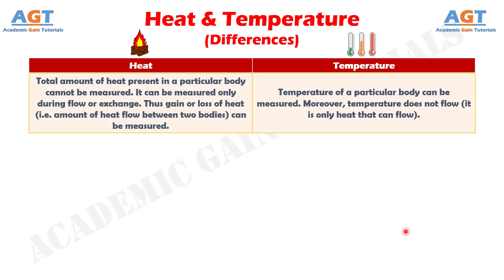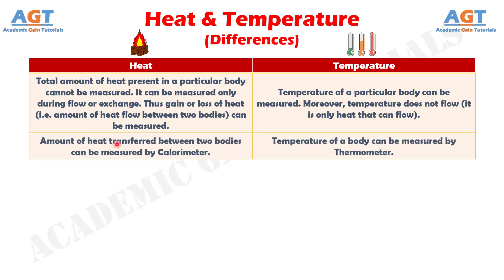Difference No. 5: The total amount of heat present in a particular body cannot be measured. It can be measured only during flow or exchange. Thus, gain or loss of heat — that is, the amount of heat flow between two bodies — can be measured, whereas the temperature of a particular body can be measured directly. Moreover, temperature does not flow; it is only heat that can flow. Difference No. 6: The amount of heat transferred between two bodies can be measured by a calorimeter, whereas the temperature of a body can be measured by a thermometer.